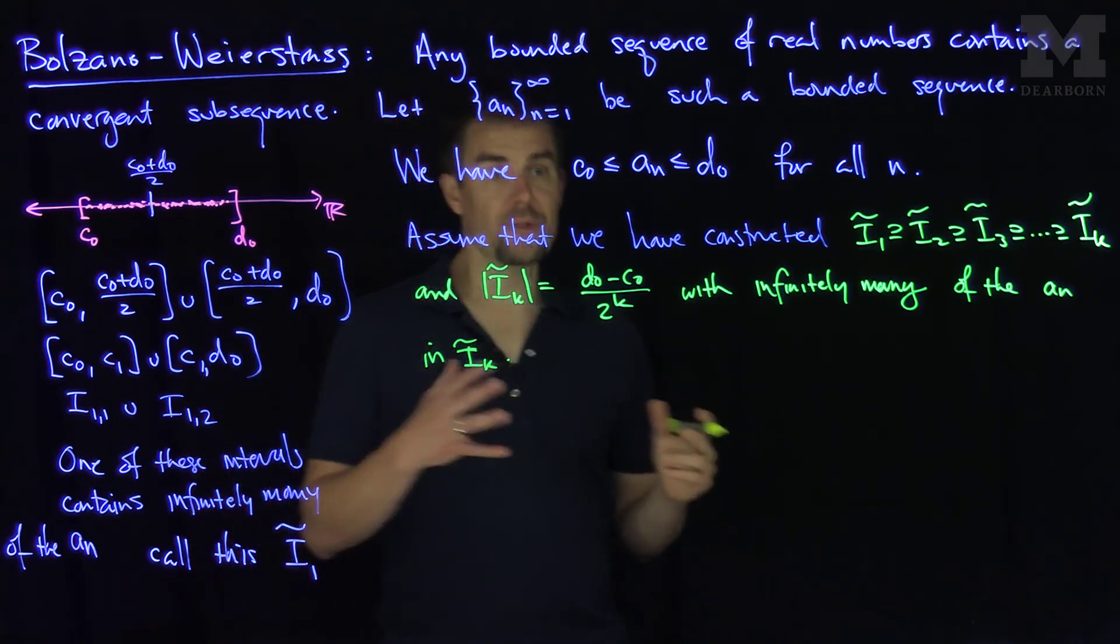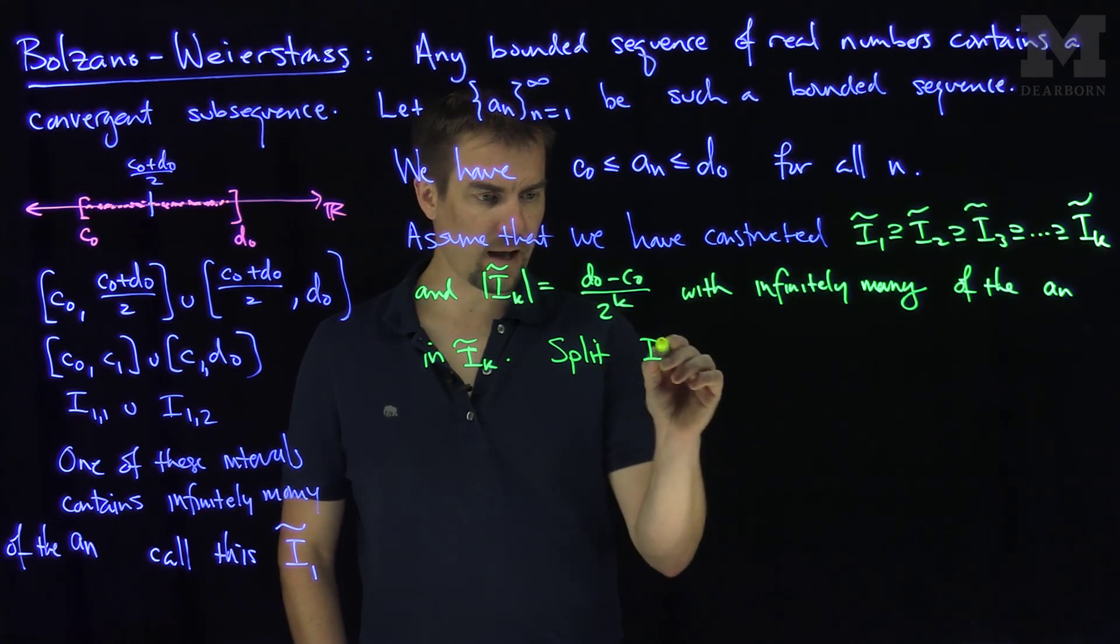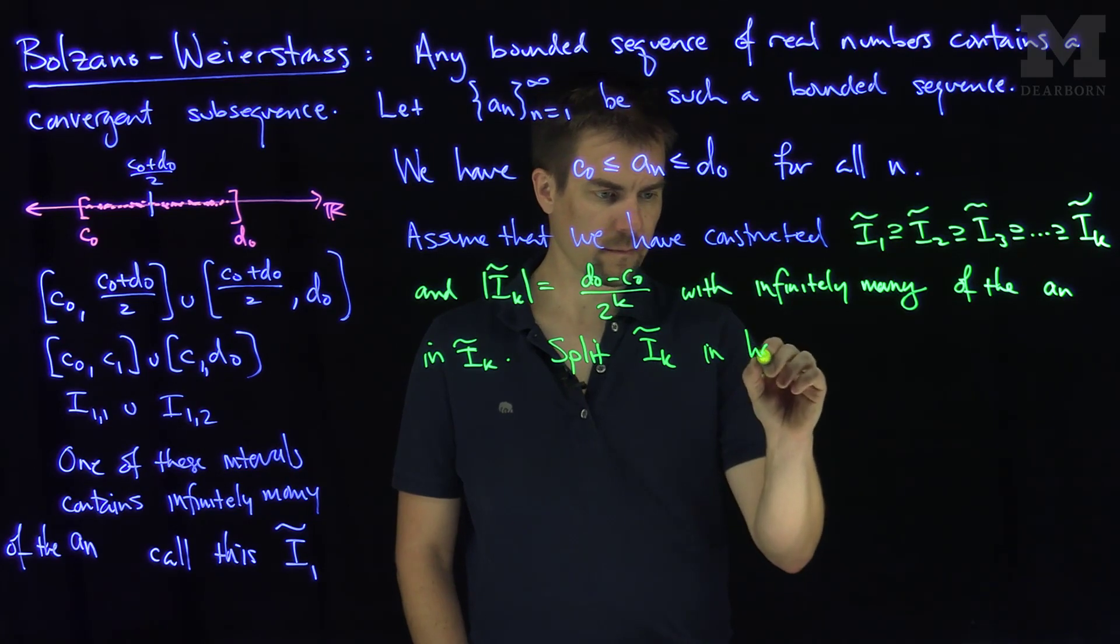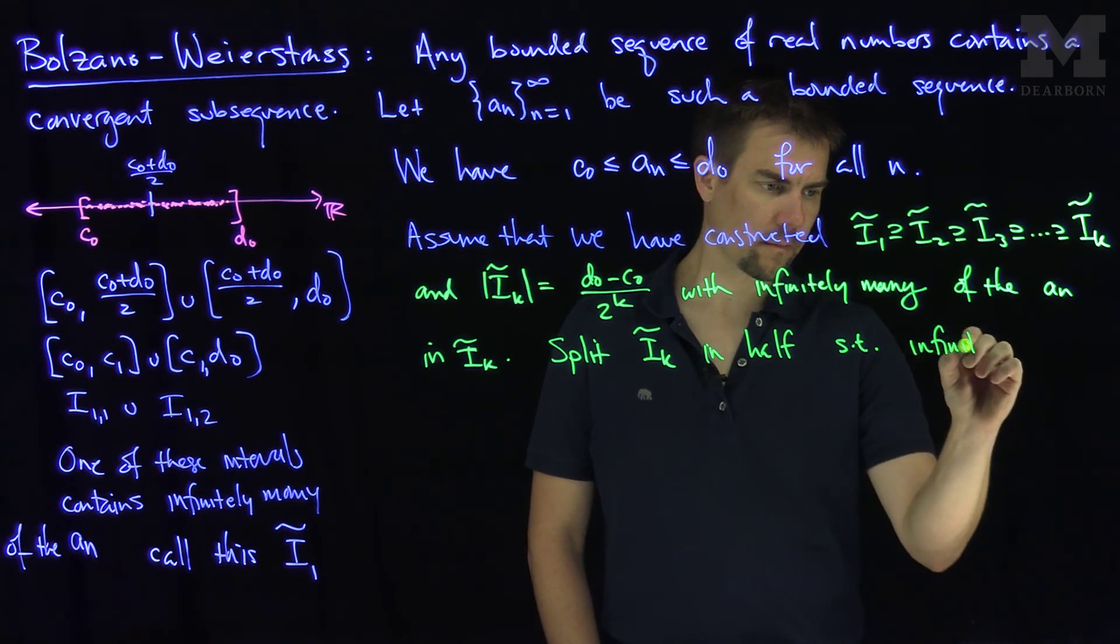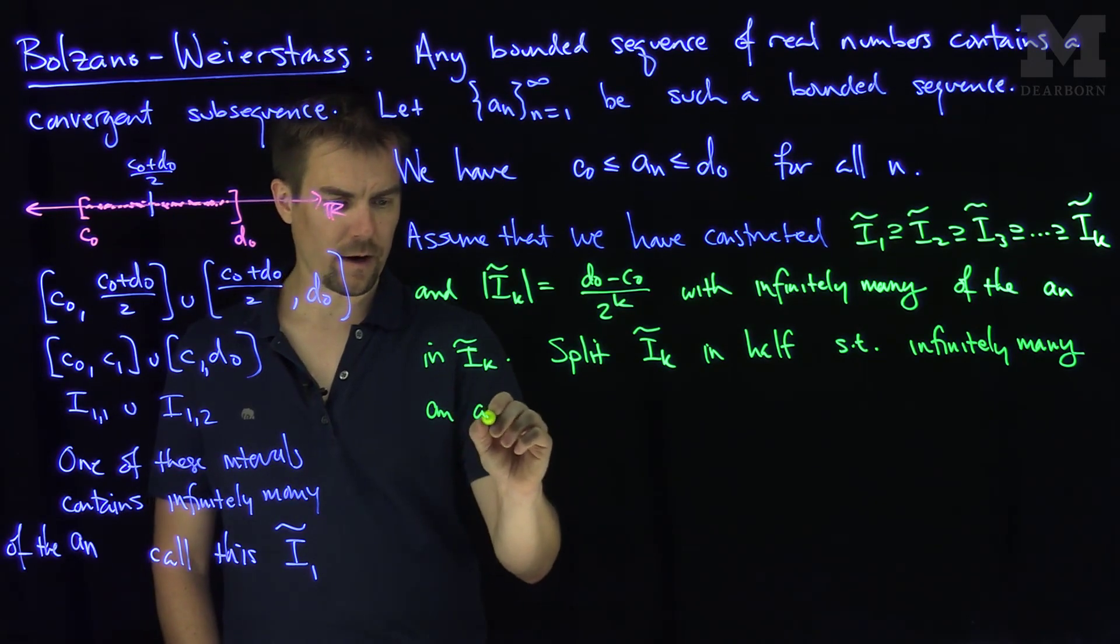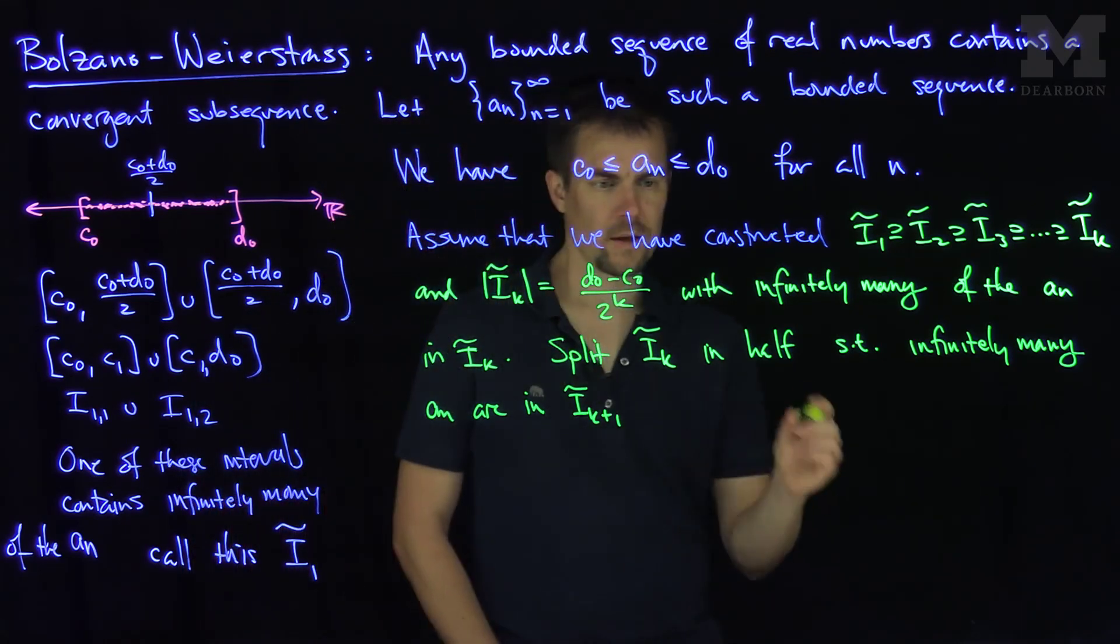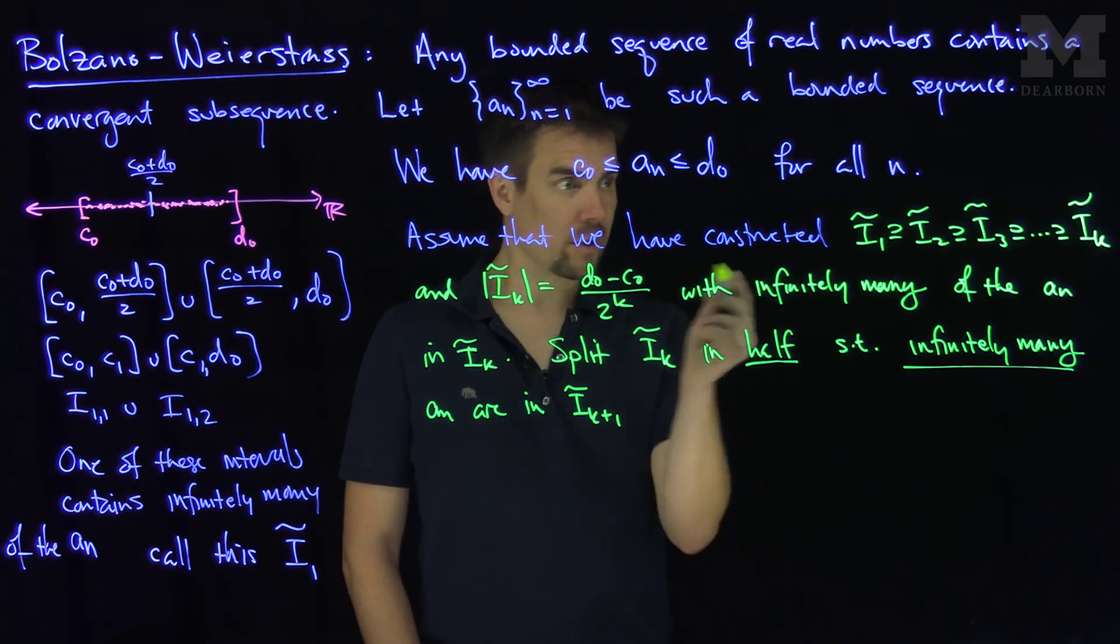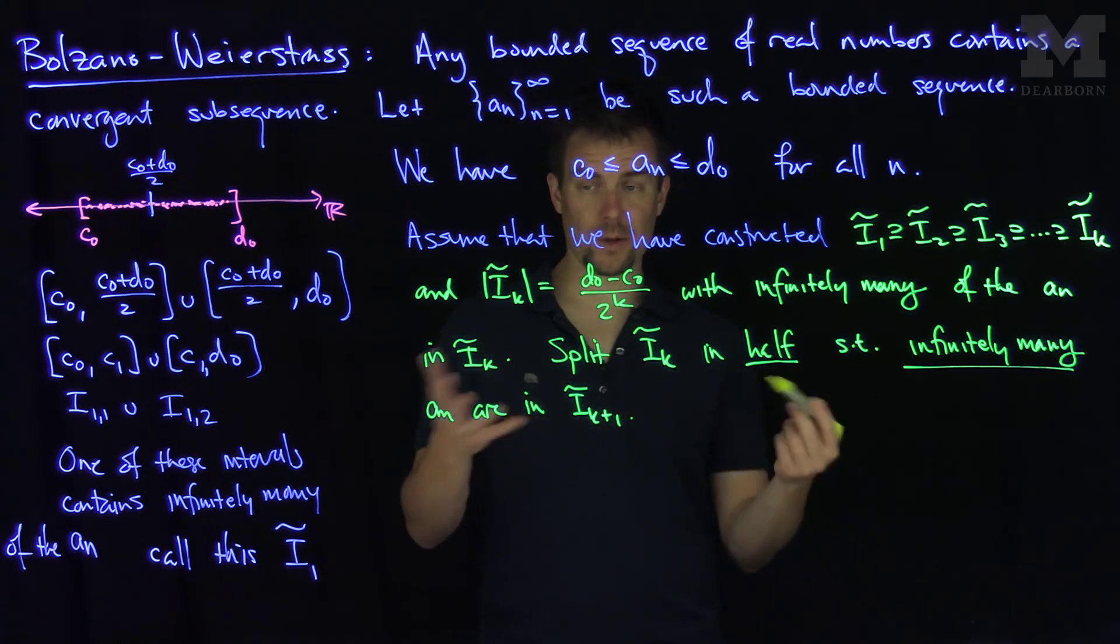Now, we'll construct the next one. So we split i tilde k in half, such that infinitely many an are in ik plus 1 tilde. It's split in half so that infinitely many of them are in the ik plus 1 tilde, and the measure result is exactly the same too. And so now what we have is a nested sequence, so that shows we can do this inductively.